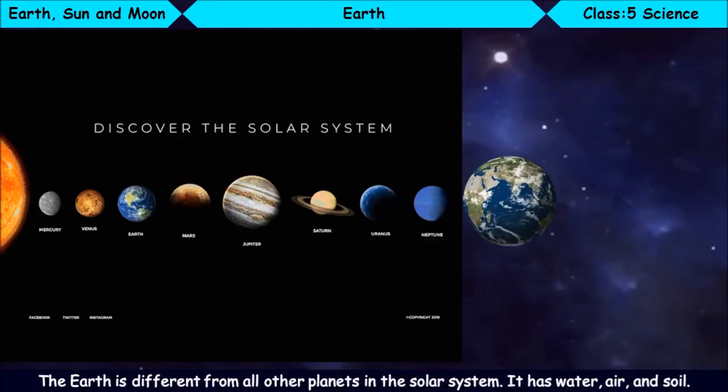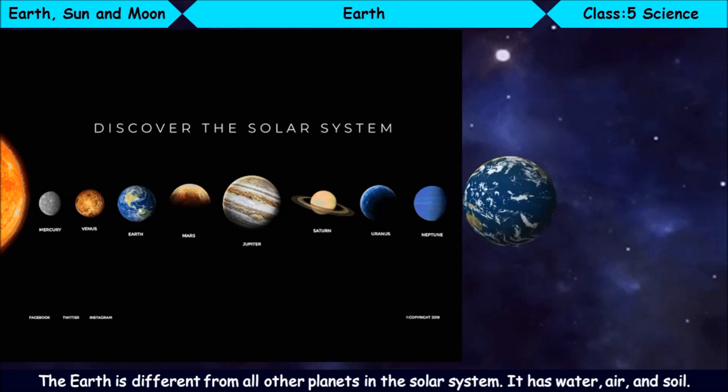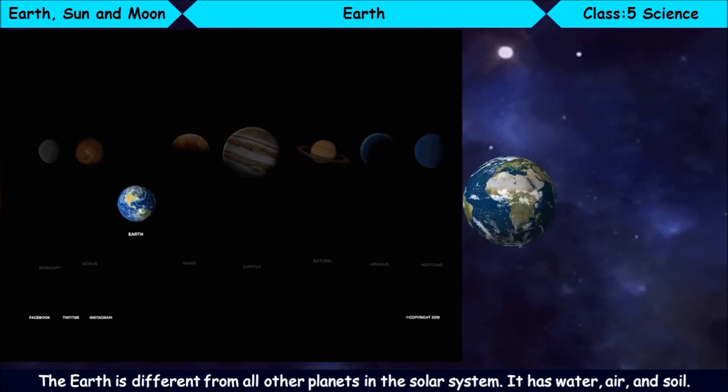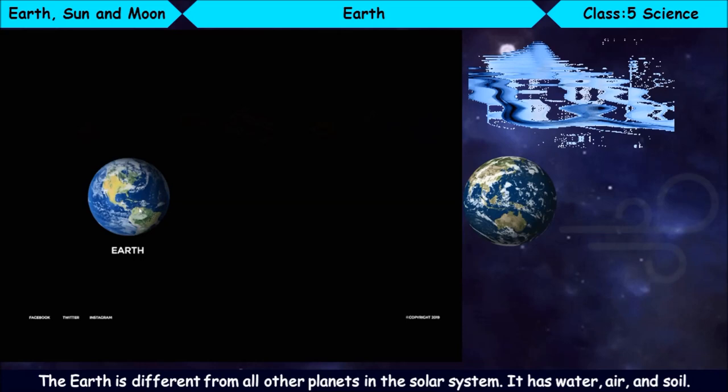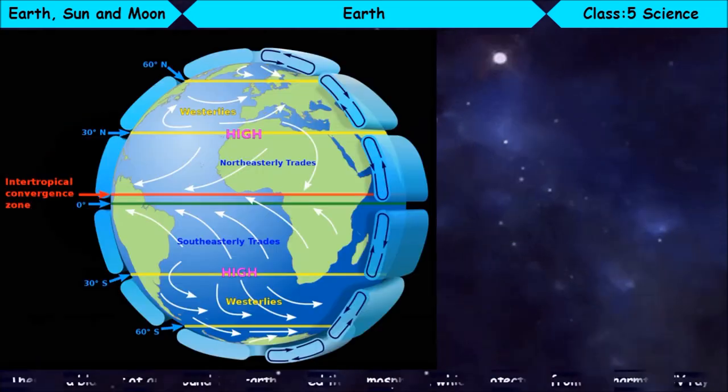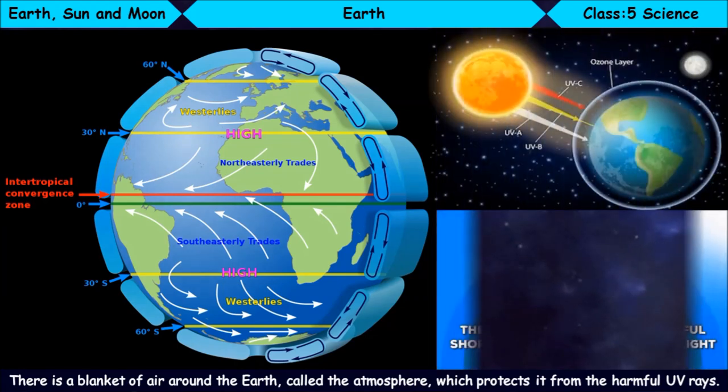Earth. The Earth is different from all other planets in the solar system. It has water, air, and soil. There is a blanket of air around the Earth called the atmosphere, which protects it from the harmful ultraviolet rays of the sun.